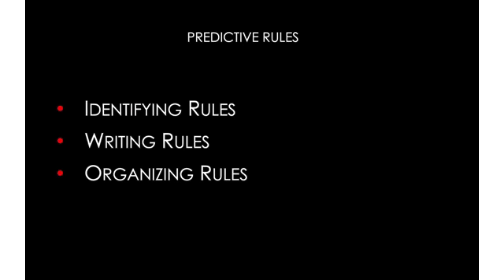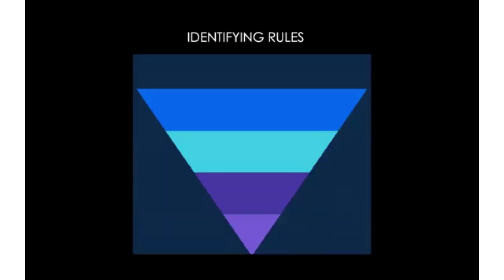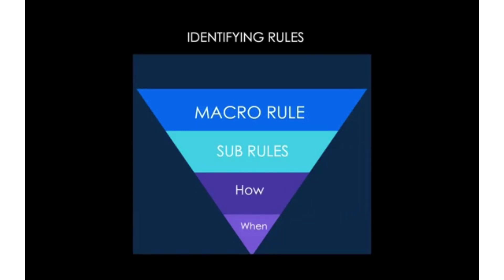When thinking about your rule statements, you'll want to remember that the rule statement should look like a funnel. You'll want to begin with a macro rule, which is the core substantive rule — these are the ones you'll most likely organize in your roadmap. Then you'll want to address any supporting rules or sub-rules that discuss how a rule should be applied or the timing for when a particular rule should be applied. Discuss each subsection analyzing one element at a time, going from the broadest rule to the most narrow.